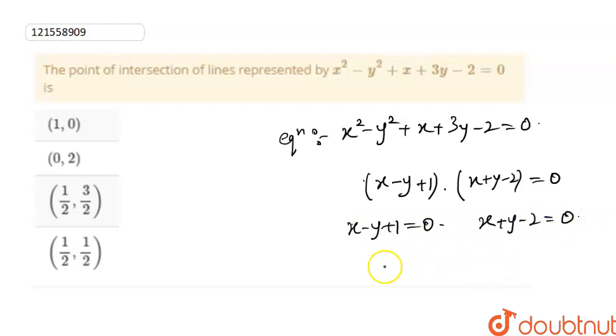So these two are going to be equal to 0. Now here I can say that x minus y equals minus 1, and x plus y is going to be equal to 2.